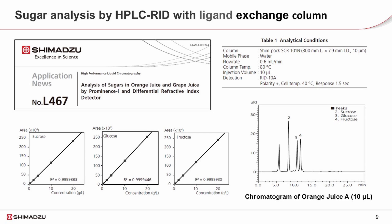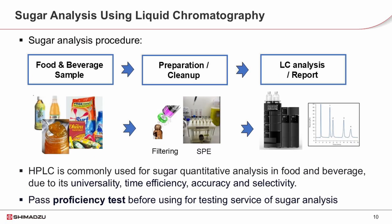It can be used for monosaccharide separation in food samples. This application note shows the analysis of sucrose, glucose, and fructose in juice samples. You can see that the elution sequence is opposite from the amino column — first the disaccharide sucrose, then the monosaccharides glucose and fructose.